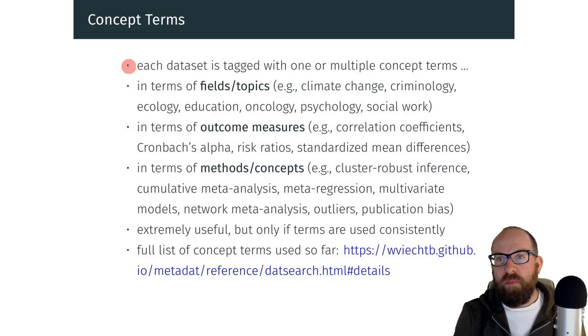So each dataset is tagged with one or multiple of these terms, and they may describe the field or topic of the meta-analysis—you see some examples here. They may also describe the type of outcome measure that was used in the meta-analysis, so we have meta-analyses conducted with correlation coefficients, as we saw earlier with risk ratios, or standardized mean differences. These concept terms can also describe the types of methods that were used in the analysis, so we have maybe meta-analysis using cluster-robust inference, meta-regression type of analyses, multivariate models, network meta-analysis, maybe datasets that include some outliers or that are illustrative of publication bias.